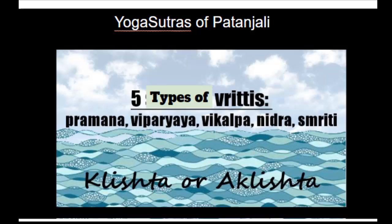When an observer tends to observe an interaction, relationship, or transaction, it happens only through these five methods. The moment the observer interprets something, it gets tainted, colored, or filtered. These five patterns fall into two categories: klishta, which is favorable, and aklishta, which is non-favorable.